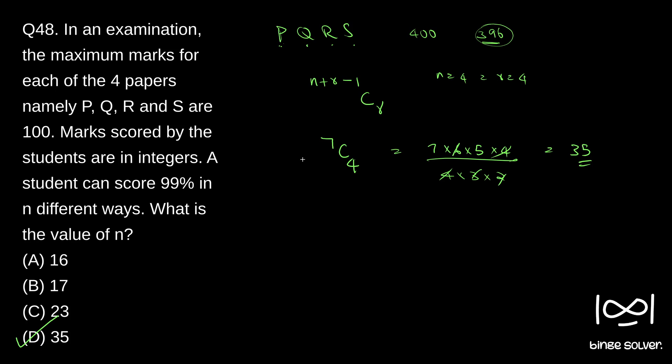You can check out if you want to learn about this combination case. So this is one method. As you can see, you can get to the answer in just one step. So I will discuss another method. The question is asking how many ways we can lose that four marks if you have four papers.